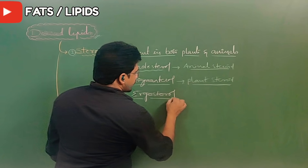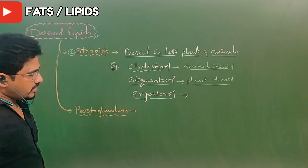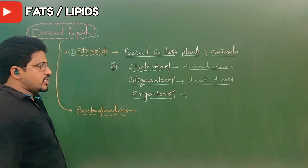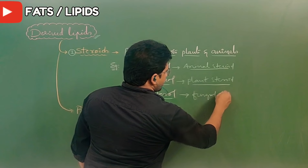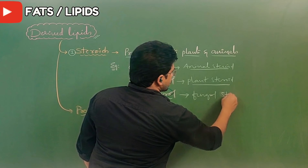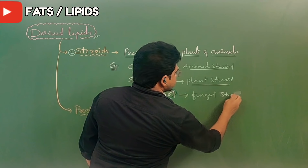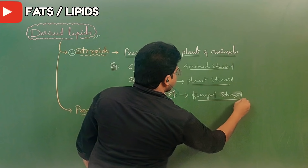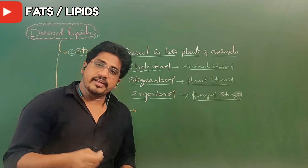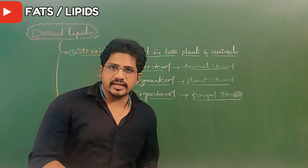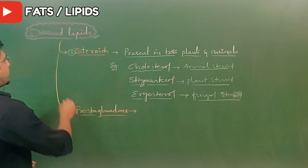Don't think steroids or cholesterols are present in animals only. Stigmosterol is the plant cholesterol. In fungi also, a sterol-type structure is present: ergosterol, also called fungal steroid or fungal cholesterol. Cholesterol is very bad when it exceeds its limits, restricting many physiological functions.